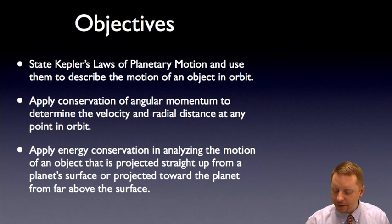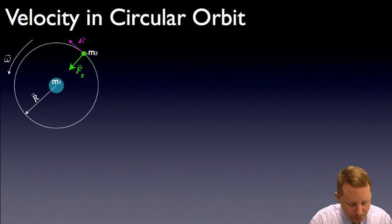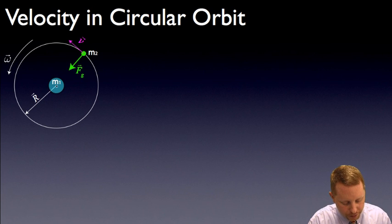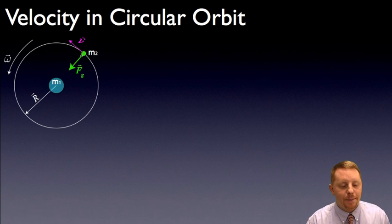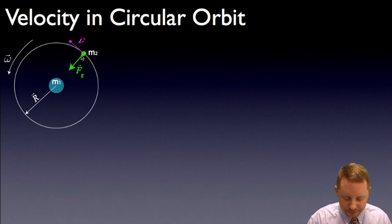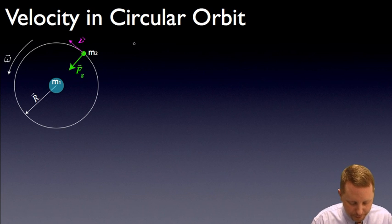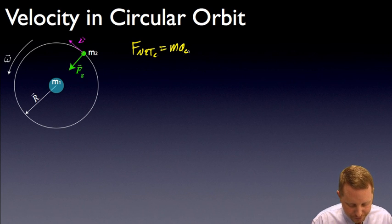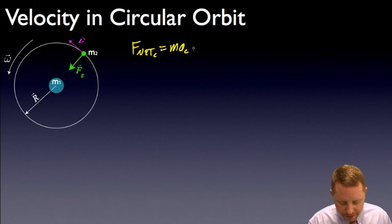Let's start by talking about circular orbits. If we have a mass m2 traveling in a circular orbit of radius r about mass m1 with angular velocity omega and tangential velocity v, what's keeping it in circular orbit? Gravity must be causing the centripetal force on the object. Therefore we can use Newton's second law of motion to solve for the velocity of the satellite m2. We start by writing Newton's second law: f_net_c = ma_c for an object traveling in a circular orbit, and we know that has to be caused by the force of gravity.